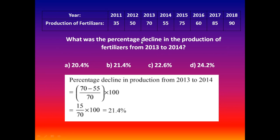The next question is: what was the percentage decline in the production of fertilizers from 2013 to 2014? The options are: A) 20.4%, B) 21.4%, C) 22.6%, D) 24.2%. To calculate this, we see that 2013 contains 70 tons and 2014 contains 55 tons. The value decreased, so we calculate the percentage decline.